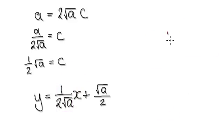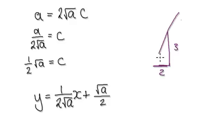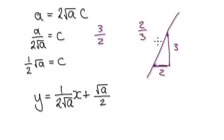Suppose you have a line where it has a height of 3 and an across of 2 — so the gradient is 3 over 2. If you look at 2 over 3, so you have a height of 2 and then an across of 3,